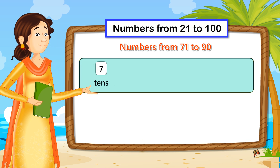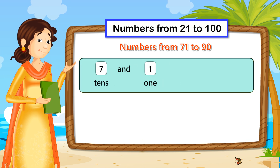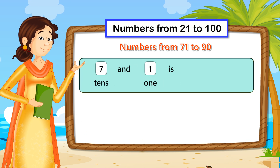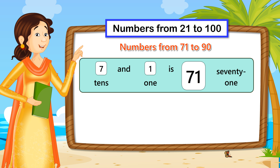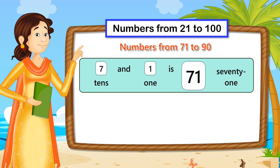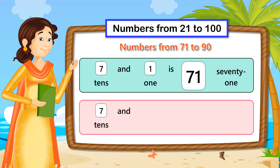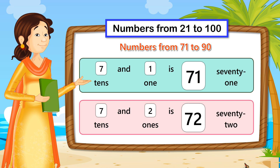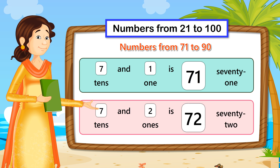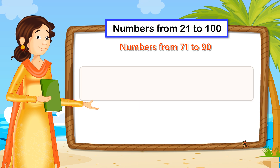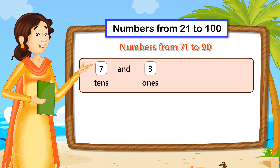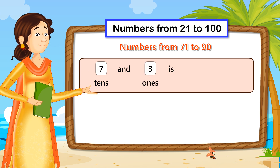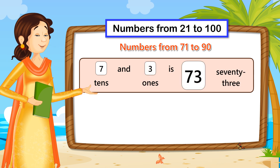7 tenths and 1 one is 71. 7 tenths and 2 ones is 72. 7 tenths and 3 ones is 73.